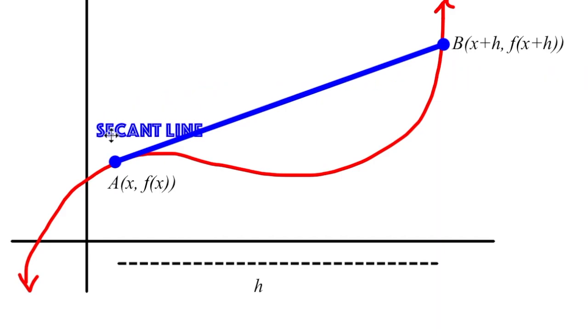This blue line is what's referred to as a secant line, and it's very easy to find the slope of a secant line using the slope formula. We have two points, we sub in y2, y1, and divide by x2 minus x1. However, this is not calculus.